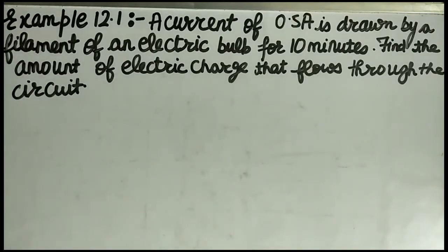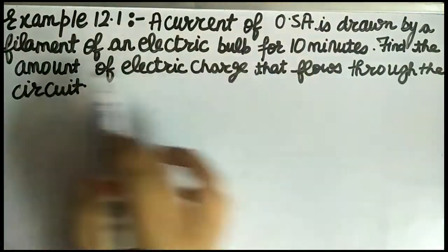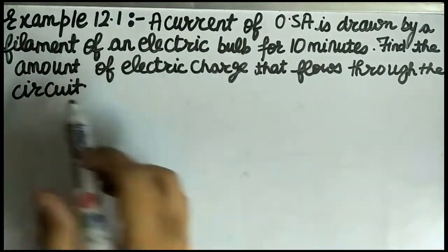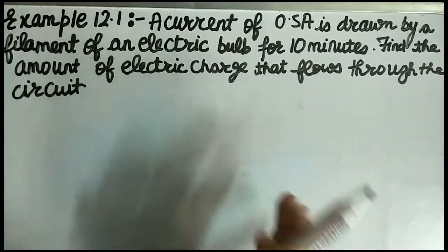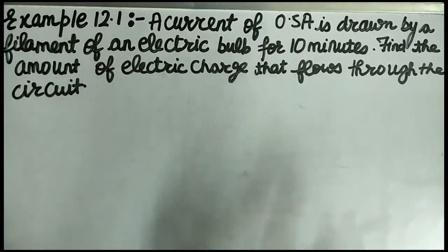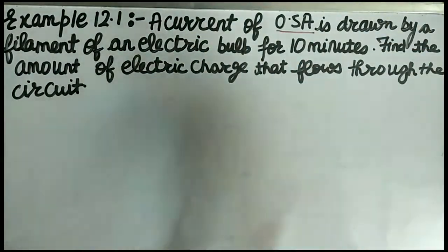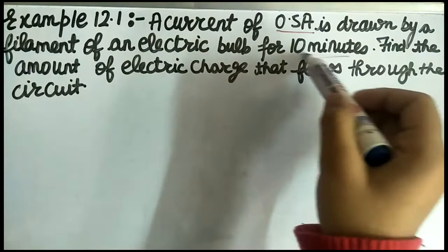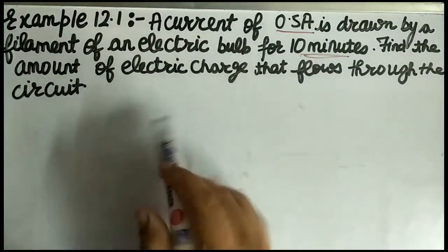The question is: a current of 0.5 ampere is drawn by a filament of an electric bulb for 10 minutes. Find the amount of electric charge that flows through the circuit. So the main points: current is 0.5 ampere, time is 10 minutes, and we need to find the electric charge.